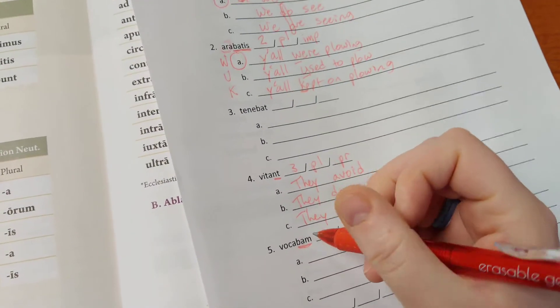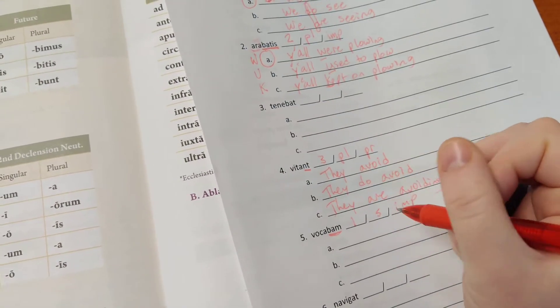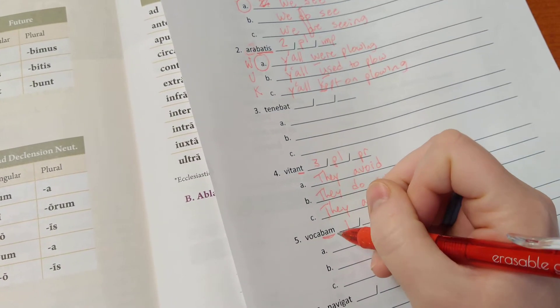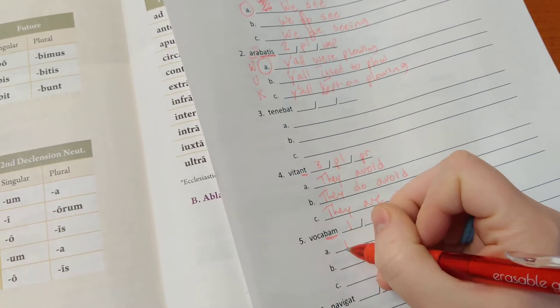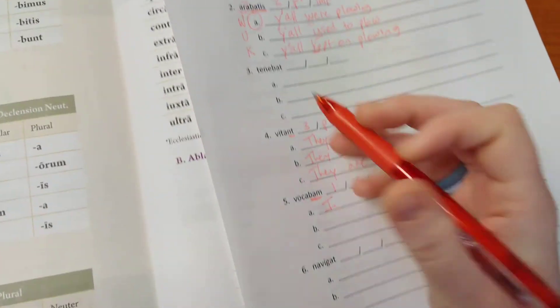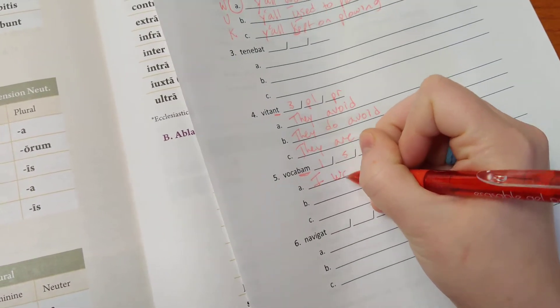Our acronym for imperfect tense is WAK. -bam, if first person singular, means I. So I, WAK, so we need a W, I was.